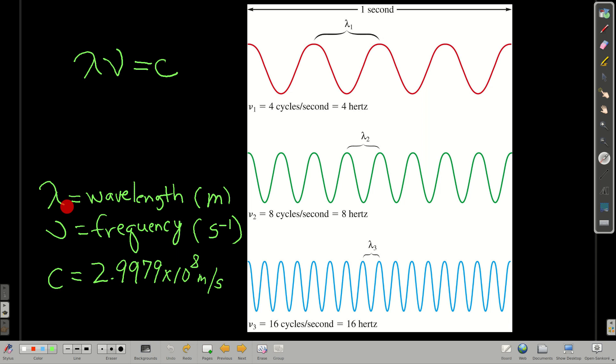The units of wavelength in this equation are meters. The units of frequency are 1 over seconds, inverse seconds, or hertz, the same thing. And the speed of light is in meters per second.